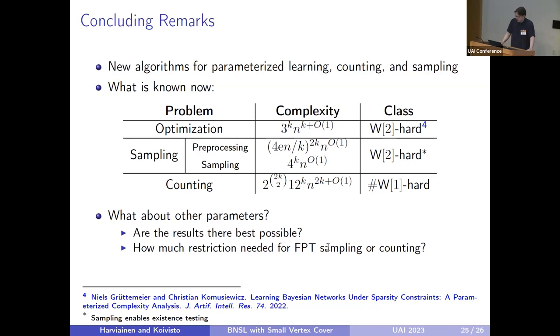In future, it's interesting to see how these results relate to other parameterizations. For example, are the known bounds there the best possible? Or if we look into sampling and counting in those cases, can we get similar parameterized complexity results there as with the optimization case? Perhaps most notably, how much do we need to restrict the class of the graphs to actually obtain fixed FPT algorithms for sampling and counting, which means that the exponent on N does not depend on this parameter value.